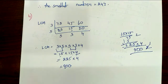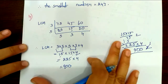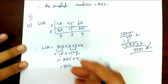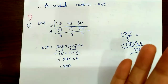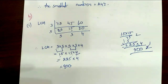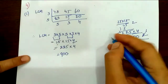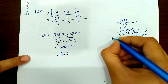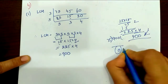Find the greatest three-digit number which when divided by 75, 45 and 60 leaves no remainder. We divide by 900. The greatest three-digit number is 999.